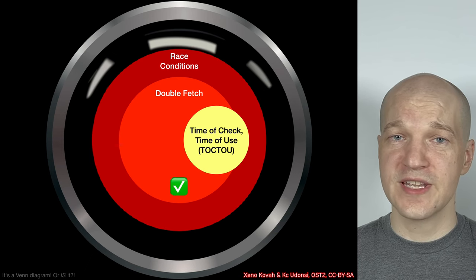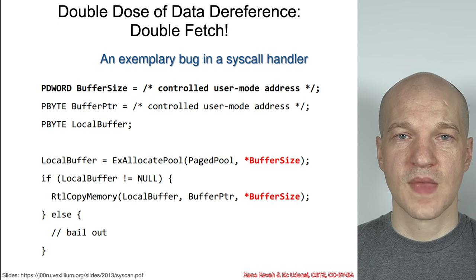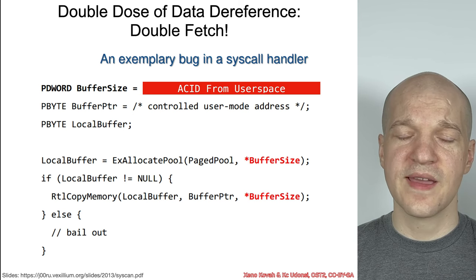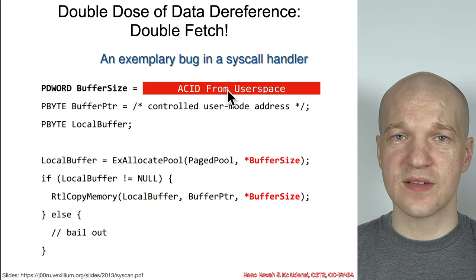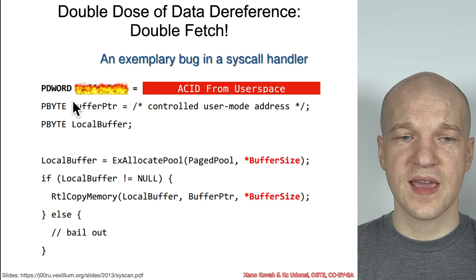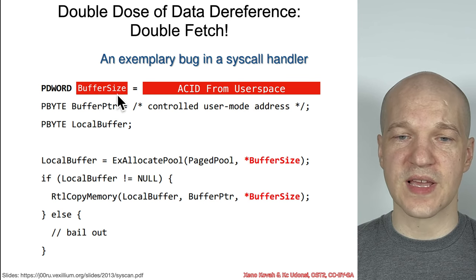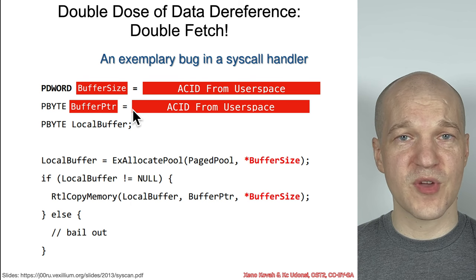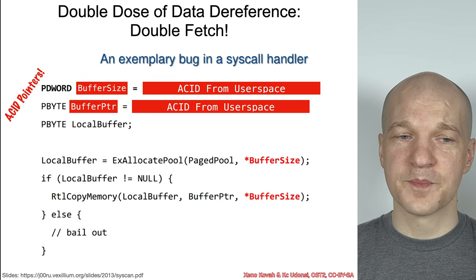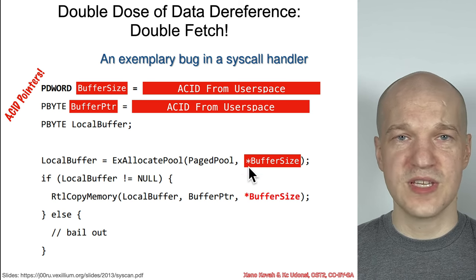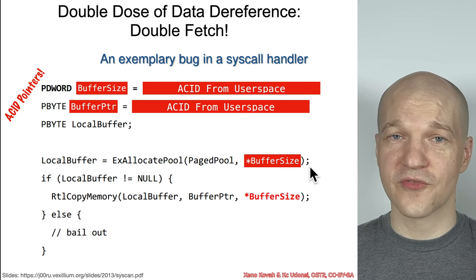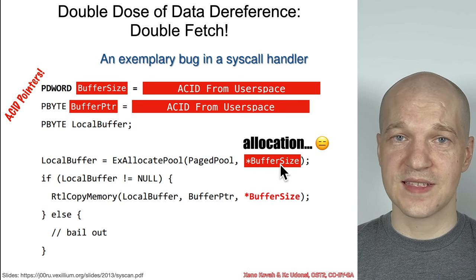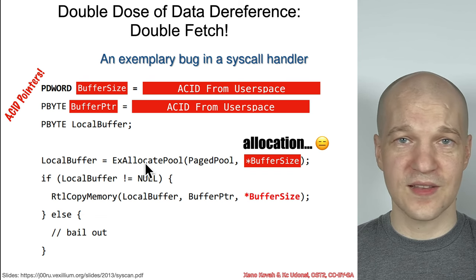That's a double-fetch vulnerability, which need not necessarily be a time of check, time of use. Let's look at a quick example. This was real but simplified code from the Windows kernel. In this case, the attacker in user space was allowed to provide a pointer to a buffer in user space, and that pointer would be stored in kernel space in this buffer size variable. They could also provide a pointer to the buffer itself — so they'd say, hey kernel, here's my buffer and here's how long it is. But these are attacker-controlled pointers, and when you dereference that pointer, you are fetching from DRAM where that pointer points. This dereference is being used for an allocation, which in and of itself is a bad thing.